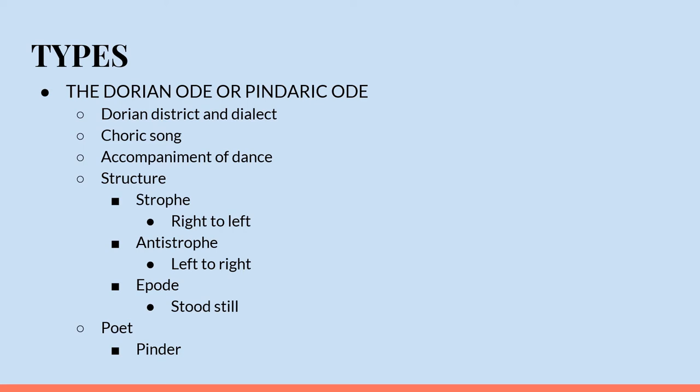The Dorian ode consisted of three parts. The first part is the Strophe — a stanza form during the recitation of which dancers made a turn from the right to the left. A similar stanza form known as the Antistrophe, during the recitation of which dancers made a counter turn from the left to the right. And the third stanza form, different from the previous two, known as the Epode, during the recitation of which dancers stood still. This sequence of Strophe, Antistrophe and Epode could be repeated any number of times in an ode of this type. From its brilliant use by the ancient Greek poet Pindar, the Dorian ode is more usually known as the Pindaric ode.